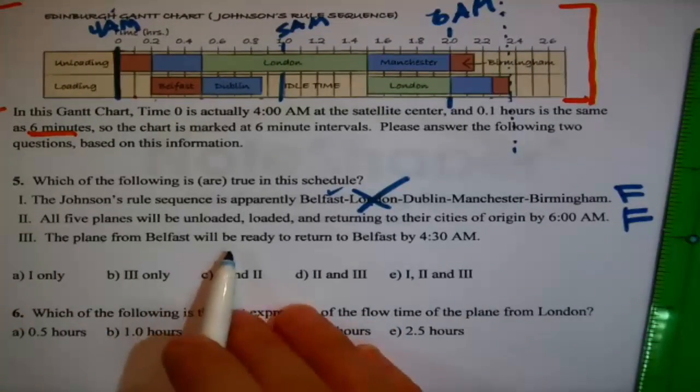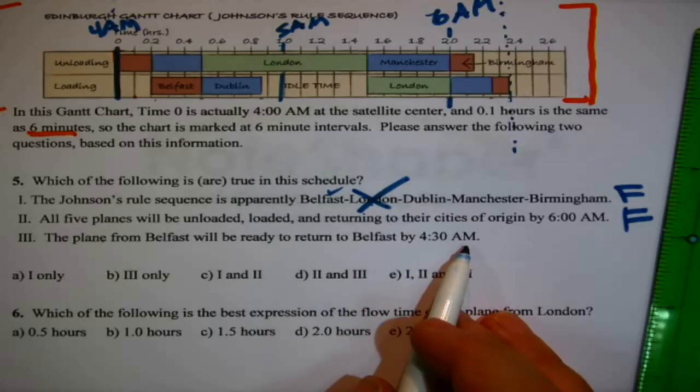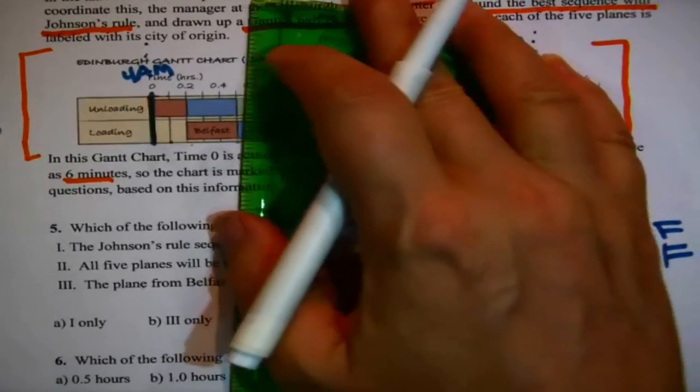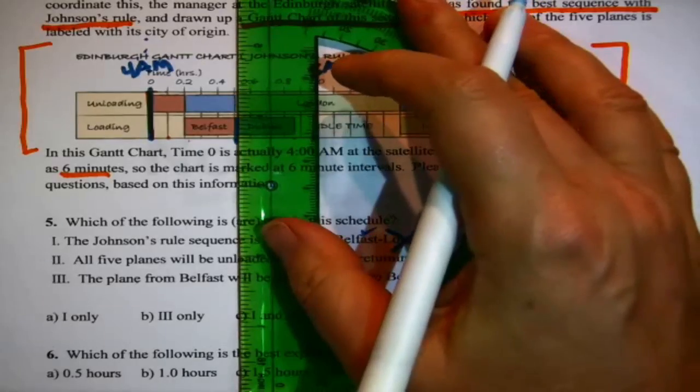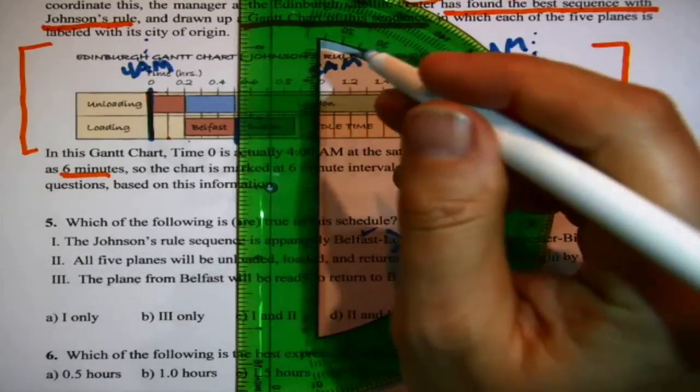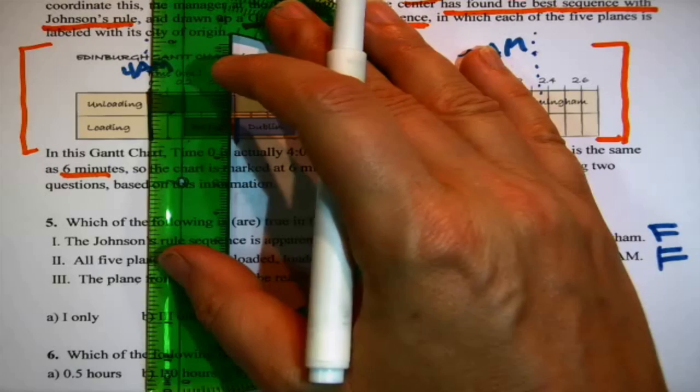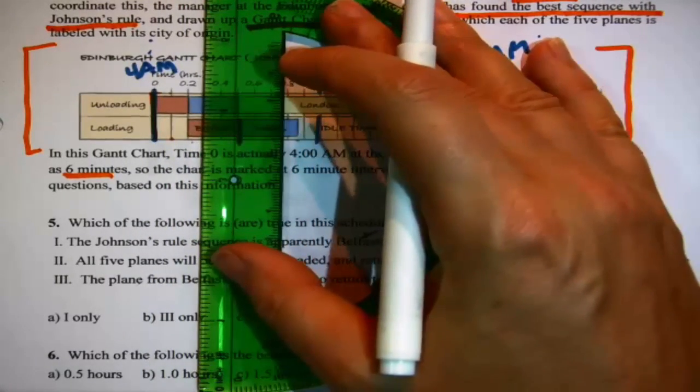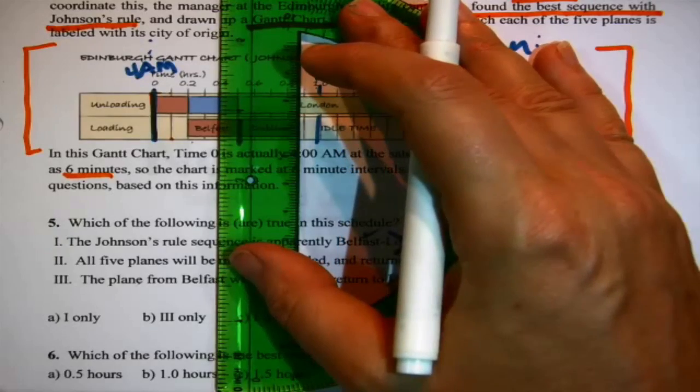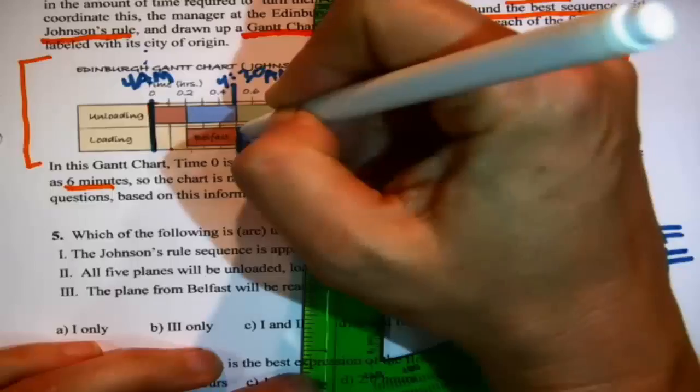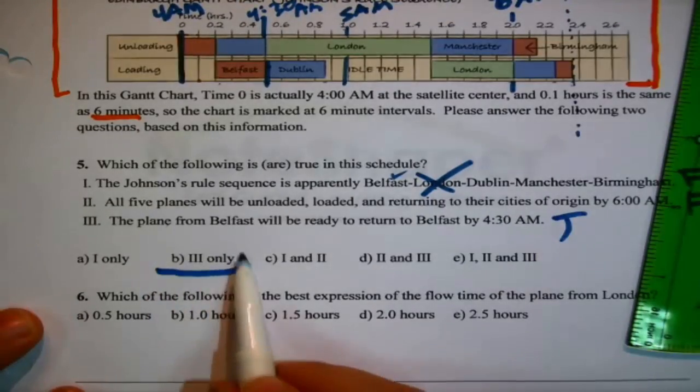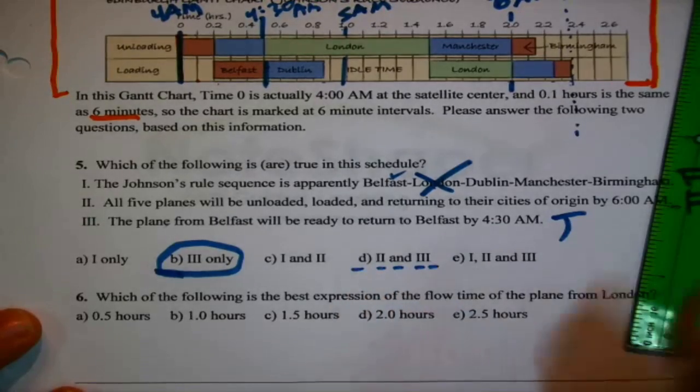The plane from Belfast will be ready to return to Belfast by 4.30am, which is to say, its flow time in clock time. Well, that right there, where the loading block ends for Belfast, is right in time when it's done and it can leave. The question is, is that 4.30? Well, let's see. Every column is six minutes, so this is 4.06am, this is 4.12am, this is 4.18am, this is 4.24am, of which .5 on that number line that's in hours is 4.30. 4.30 in the morning, and that is right when Belfast is finished, so that one test is true. So, only the bottom one test true, that would have been partial credit in its day.